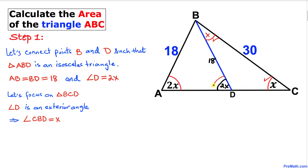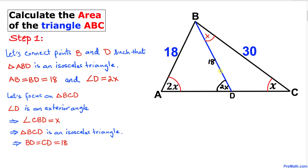That means angle BCD has to be x, making triangle BCD an isosceles triangle because this angle equals this angle. So if BD is 18, then DC must be 18 as well.